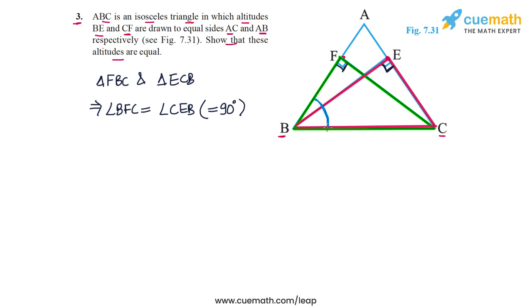We also note that another angle pair is equal. If you take angle B, the angle at B for triangle FBC, and the angle at C for triangle ECB, these angles are also equal. So angle FBC is equal to angle ECB. Why? Because these angles are the angles opposite the sides AB and AC in triangle ABC. And because in triangle ABC, AB and AC are equal, the angles opposite those sides will also be equal. So these two angles are equal because AB is equal to AC.